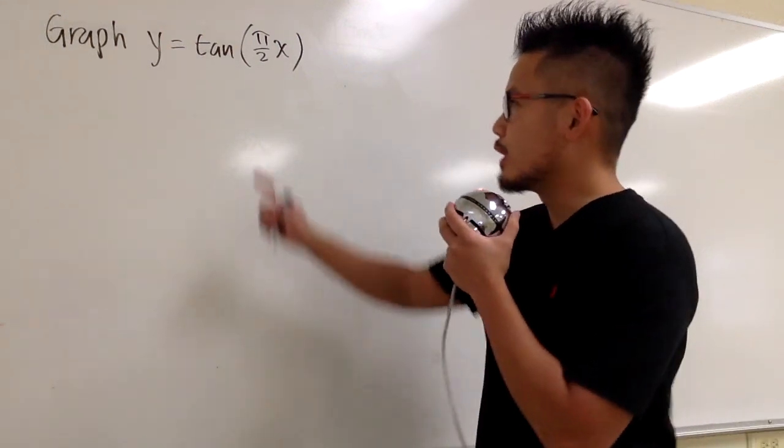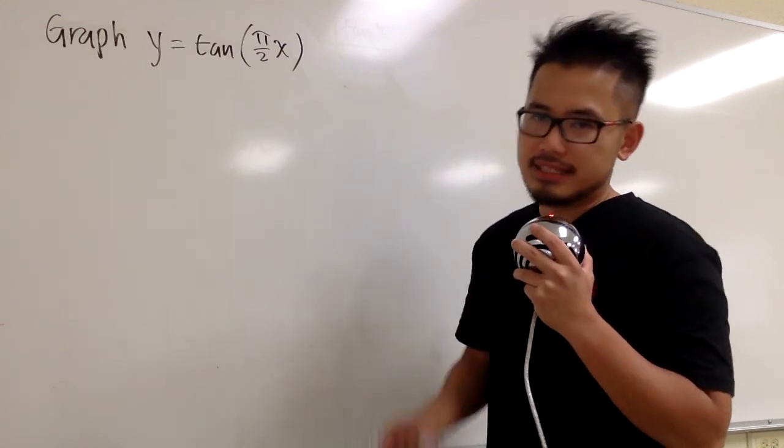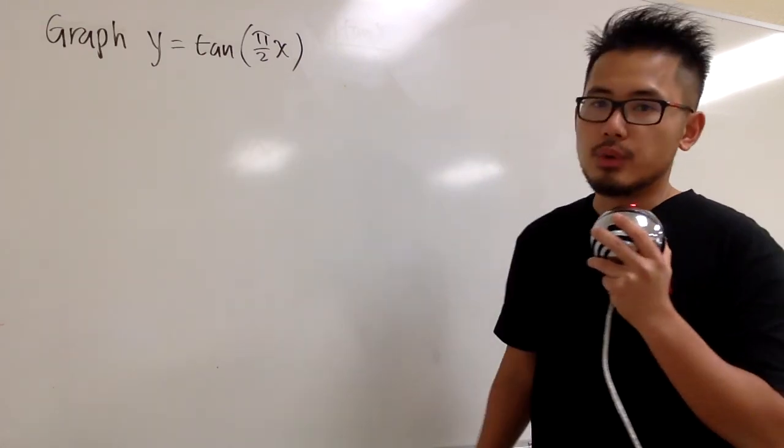All right, now let's take a look at how we can graph y equals tangent of pi over 2 times x. So first, we are going to find the domain of this equation right here.